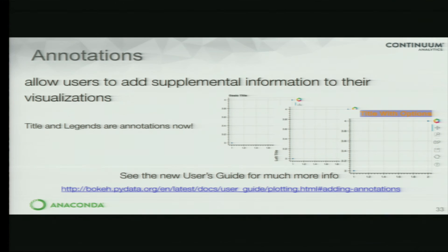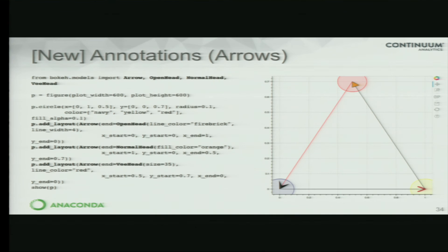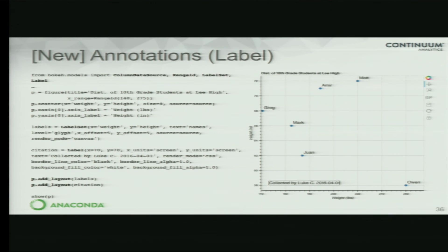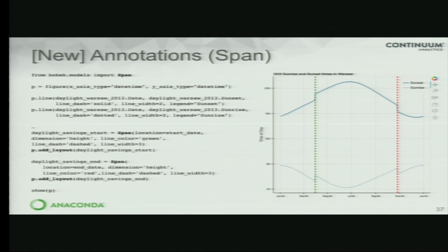Bokeh now has real annotations. You can use stuff to annotate your plots — we have arrows, box annotations to highlight specific areas, and labels with different aspects. You just import what you need, add it as a layout element with an open head arrow and give the coordinates. You can actually tie annotations to data sources.